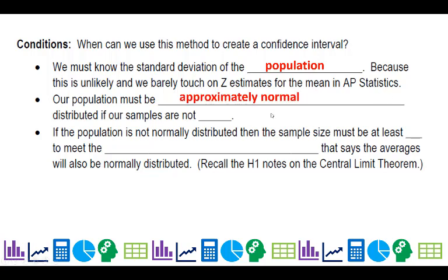Now our population must be approximately normal if the samples are not large. However, if the population is not normal, then the sample must be at least 30, the sample size to meet something called the central limit theorem, which we actually introduced in your H1 notes.